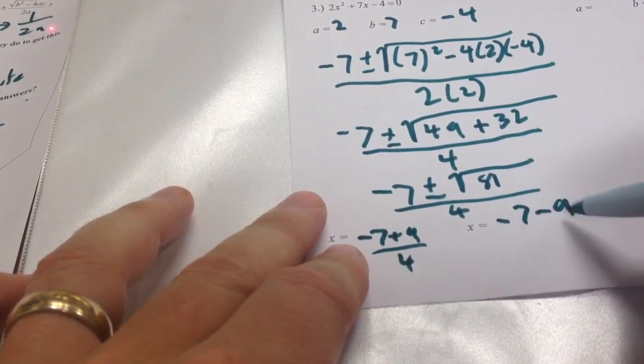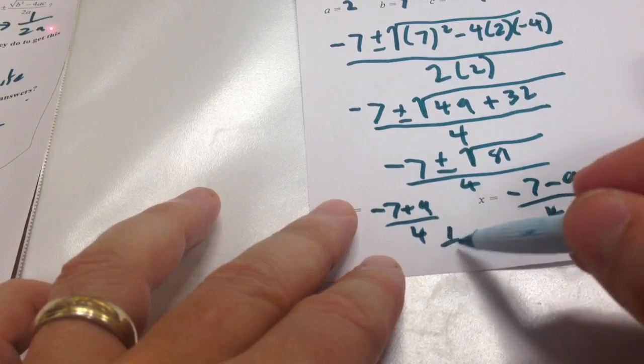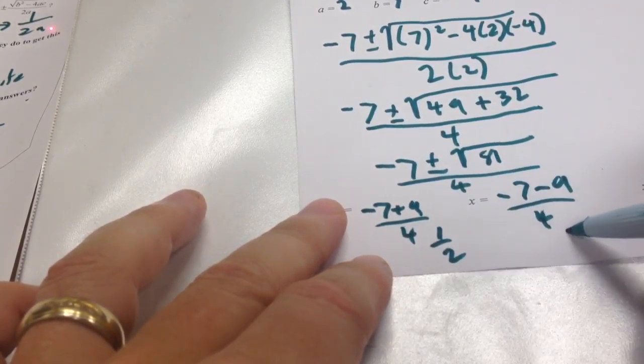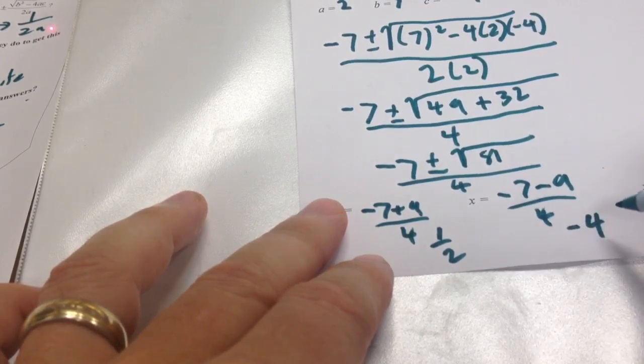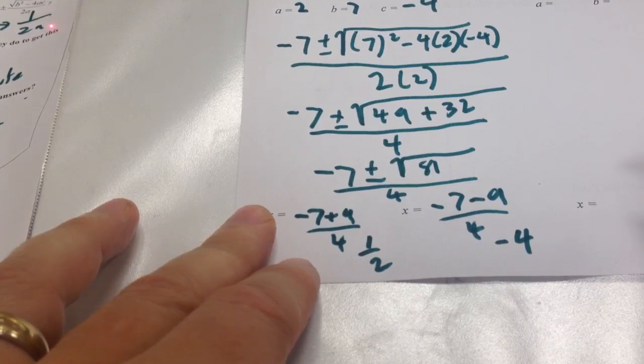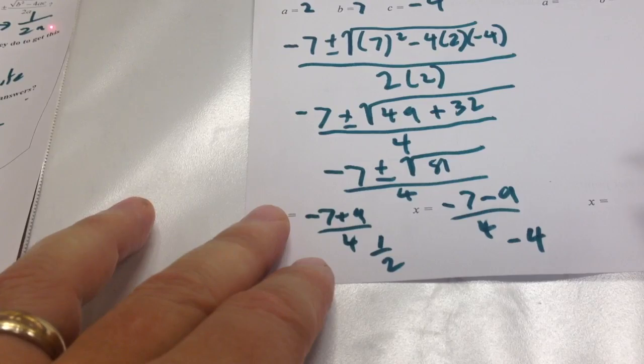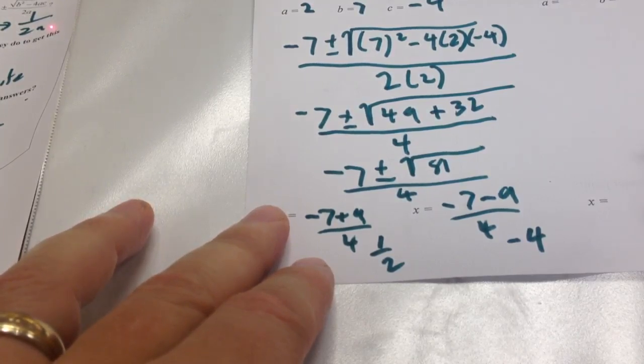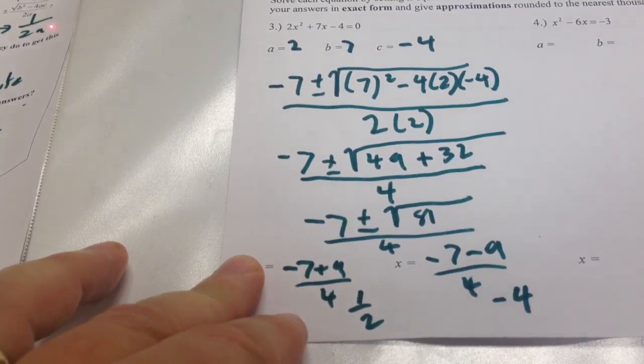So when I get that finally, that will simplify this. That's going to be -7 + 9 over 4 and -7 - 9 over 4. So that's 2 fourths or 1 half. And that is -16 over 4 or negative 4. I think I did that all right. I did that pretty quickly in my head. I think those are the right answers. That's symmetric around. Yeah, I think that's symmetric. I think that's right. There could be a mistake there. But I think I did that right. That's all.